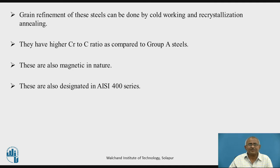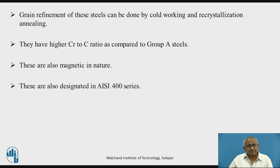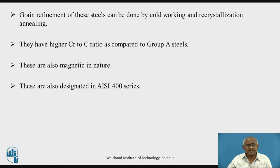Grain refinement of these steels can be done by cold working and recrystallization annealing. They have a higher chromium-to-carbon ratio compared to Group A steel, because they have very low carbon. Carbon content of these steels generally does not exceed 0.2 percent, while chromium content is much higher. These steels are also magnetic in nature. There is a common misconception that stainless steels are non-magnetic, but martensitic stainless steel as well as ferritic stainless steel are both magnetic. Ferritic stainless steels are also designated in the AISI 400 series.